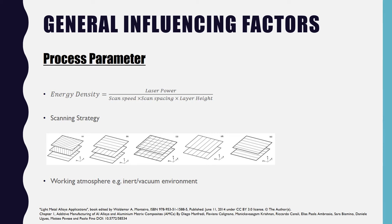The next point is the working atmosphere. Whether your working atmosphere is an inert environment or a vacuum environment will have an effect on the process itself. For example, the flowability of the powder differs between an inert and a vacuum environment, and this is an area of active research.